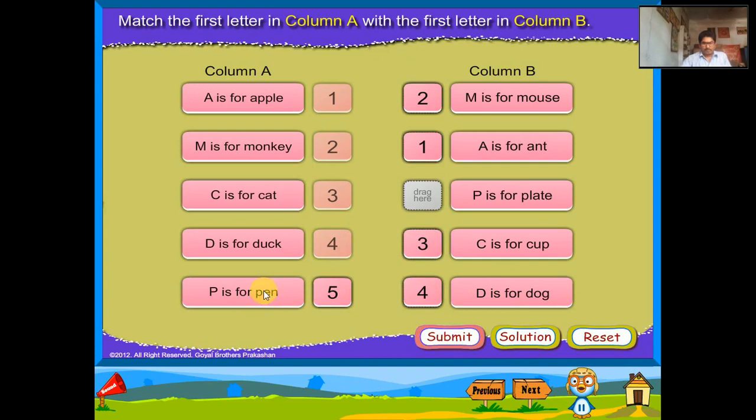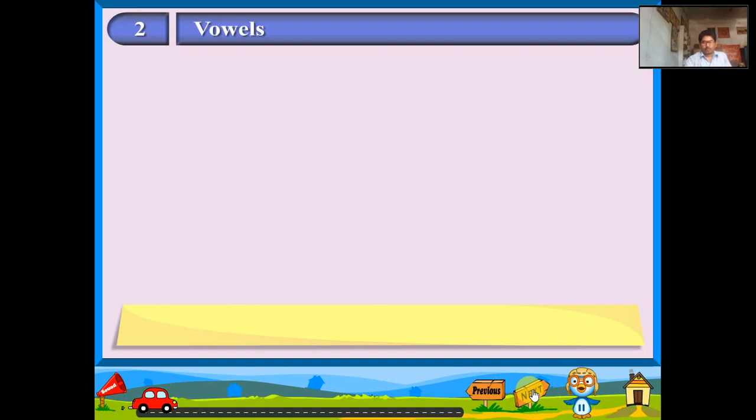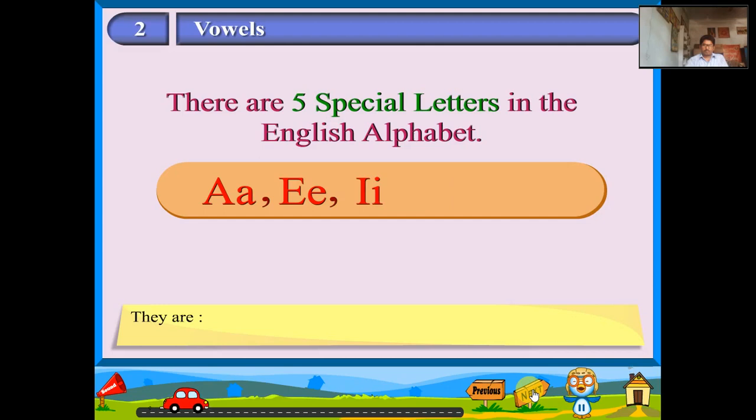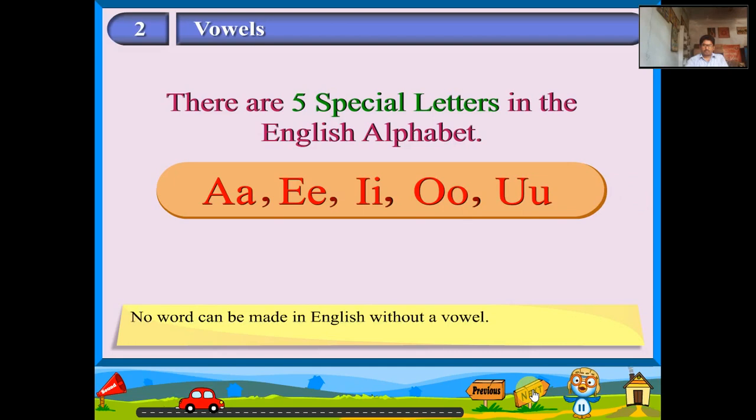Vowels. There are five special letters in the English alphabet. They are A, E, I, O, U. No word can be made in English without a vowel.